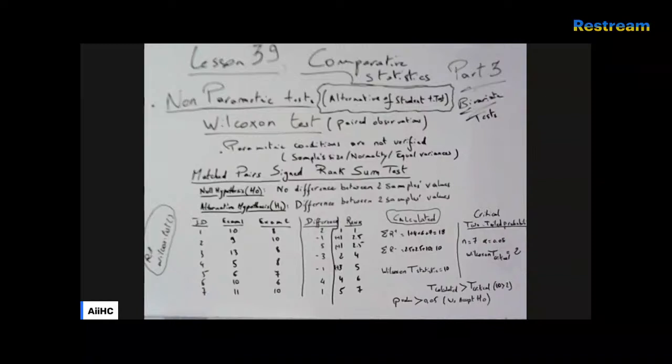We calculate the differences between Exam 1 and Exam 2: 10 minus 8 is 2, 9 minus 10 is −1, 13 minus 8 is 5, 5 minus 8 is −3, 6 minus 7 is −1, 10 minus 6 is 4, and 11 minus 10 is 1.